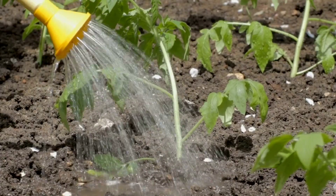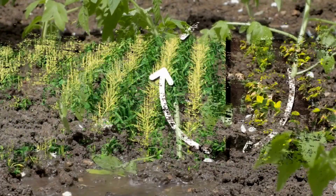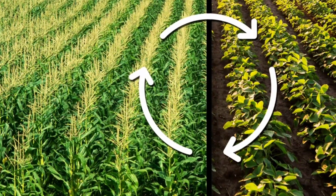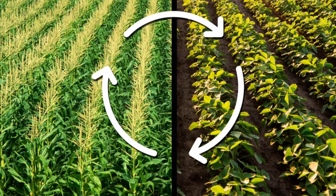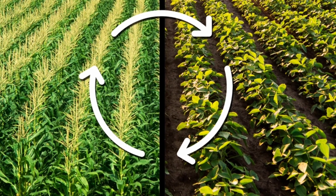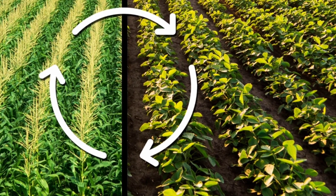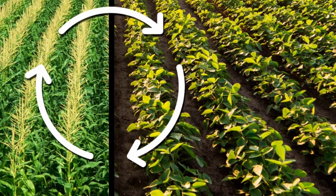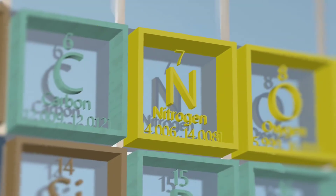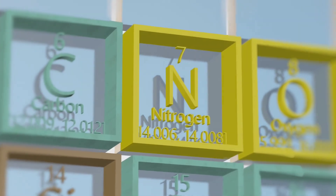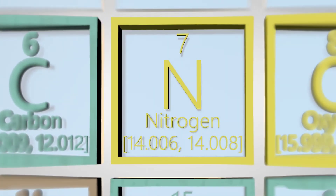Manure replenishes the soil with all the nutrients. Another method of replenishing the soil with nutrients is through crop rotation. This can be done by growing different crops alternately, which helps in the replenishment of the soil with nitrogen.